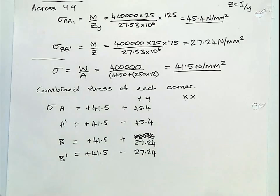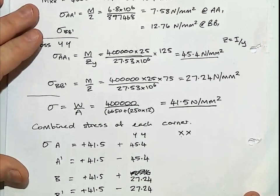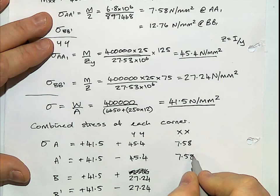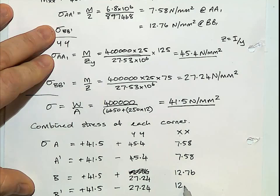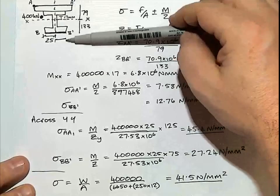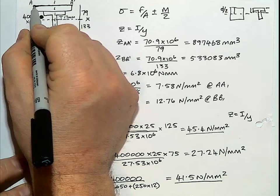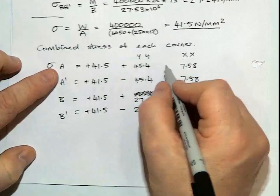Then looking at our stresses across the XX, which is what I've got at the top of the page, for A, A dash, I've got 7.58. And for B, B dash, I've got 12.76. Across this XX, because my force is at the top, it's going to create a compression at A and A dash and tension at B, B dash. So because it's compression at the top, A, A dash, it's positive. So for my A and A dash, I've got positive. And for my V, B dash, it's minus.